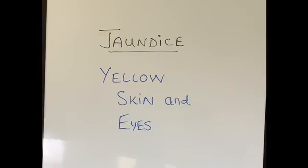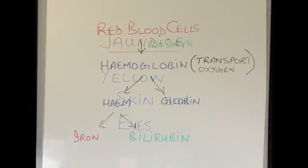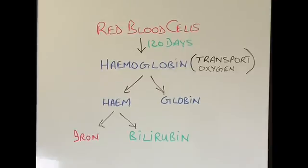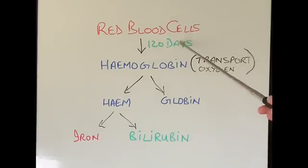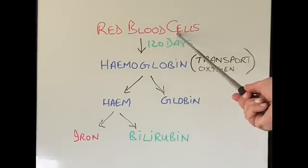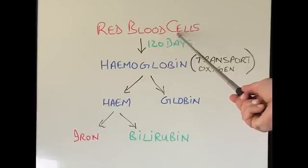So today we are going to talk about different types of jaundice. To understand jaundice, it is important to understand where the yellow color comes from in our skin and eyes. As we know, our blood is red because of cells in the blood called red blood cells, or RBCs.